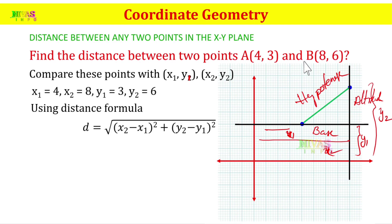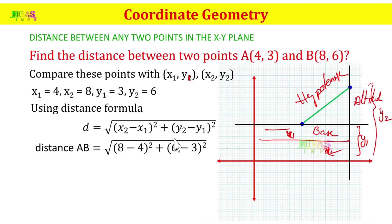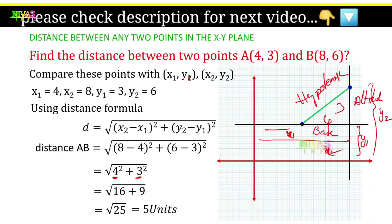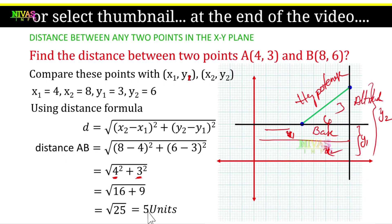Distance AB equals the square root of (8 minus 4) squared plus (6 minus 3) squared, which equals the square root of 4 squared plus 3 squared, equals the square root of 16 plus 9, equals the square root of 25, which equals 5. So the distance is 5 units. The base is 4 and the altitude is 3; 4 squared plus 3 squared equals 25, and the square root of 25 is 5. This is the way to find distance.